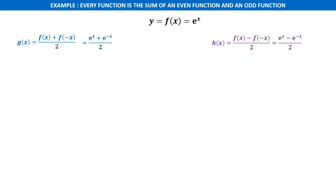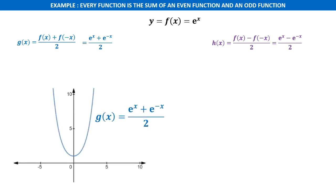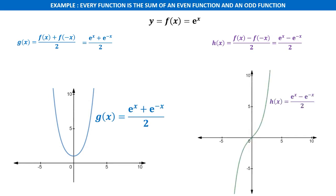You can verify this by graphing g(x) and h(x) on a graphing calculator. The graph of g(x) is symmetric about the y-axis, confirming it is an even function, and the graph of h(x) is symmetric about the origin, confirming it is an odd function.